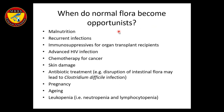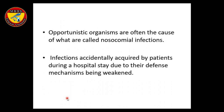Normal flora becomes opportunistic when host factors such as malnutrition, recurrent infection, immunosuppressives, organ transplant, advanced HIV infection, chemotherapy, cancer, skin damage, prolonged antibiotic treatment, pregnancy, aging, or leukopenia are present. These are also called nosocomial infections, which are acquired in a hospital setting.